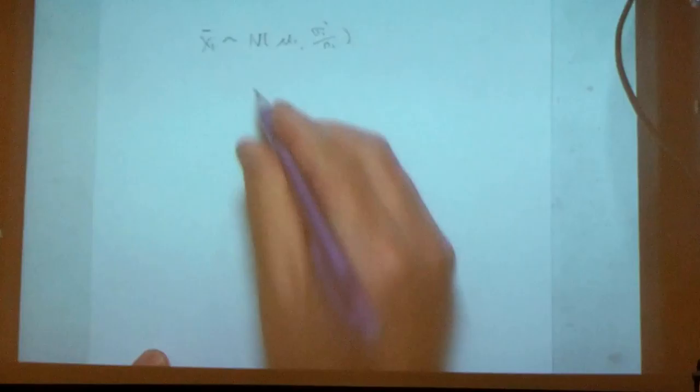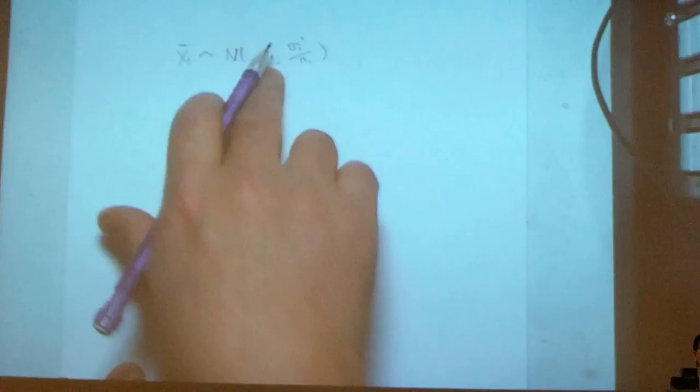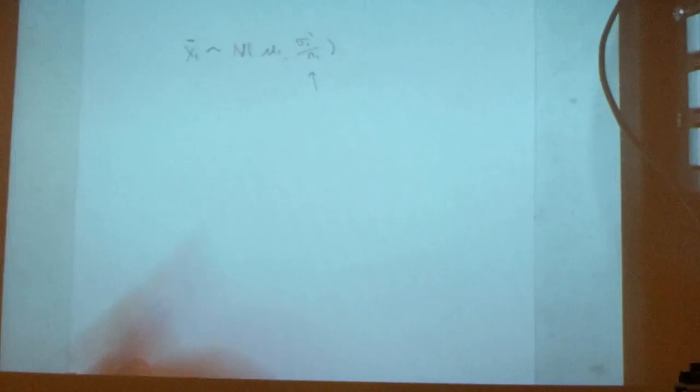This one, and this guy, if I write this one, right? So, the sampling distribution of the sample mean is normally distributed with the actual population mean, and this is the variance, okay, the variance.